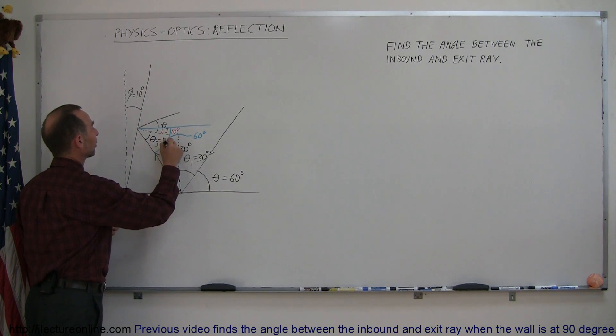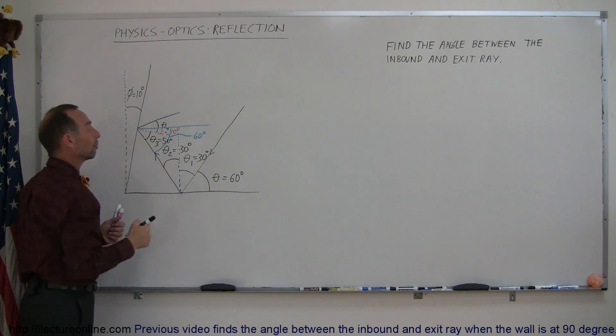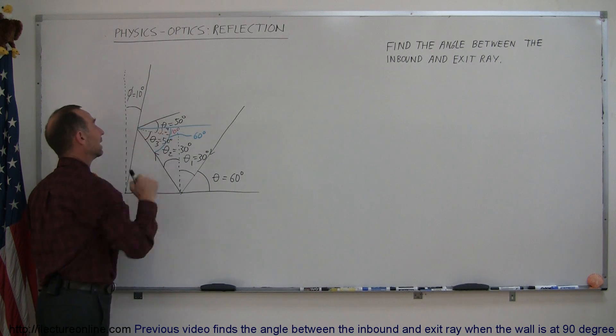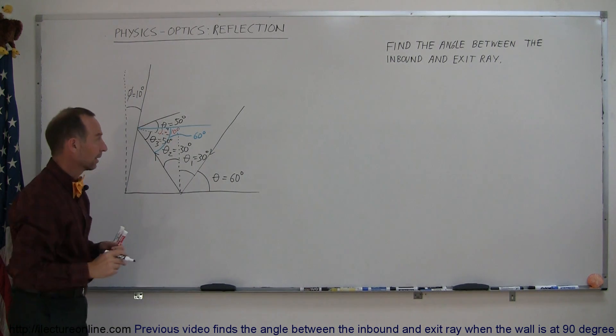So theta sub 3 is 50 degrees which means that theta sub 4 must also be 50 degrees because again the angle of incidence must equal the angle of reflection.